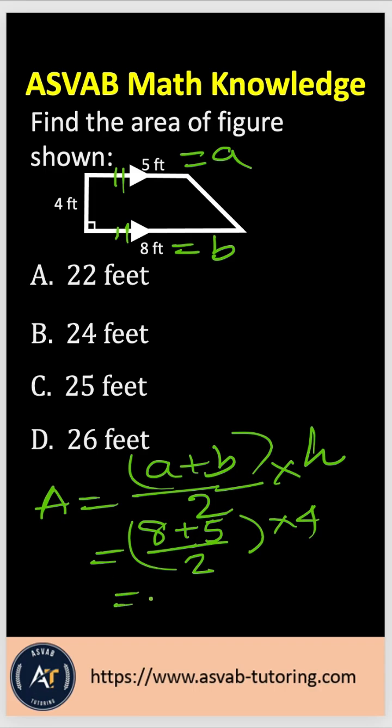8 plus 5 is 13 times 4 is 52 divided by 2 equal to 26. So that is the correct answer option.